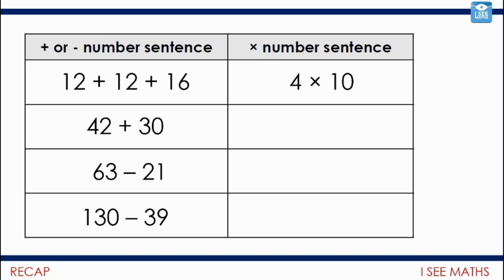So, how many 4's in 12? There are 3. And then in the next 12, that's another 3. So that's 6 4's in total there. And in 16, that is 4 4's. So in total, there are 10 4's. 12 plus 12 plus 16 is the same as 4 times 10.